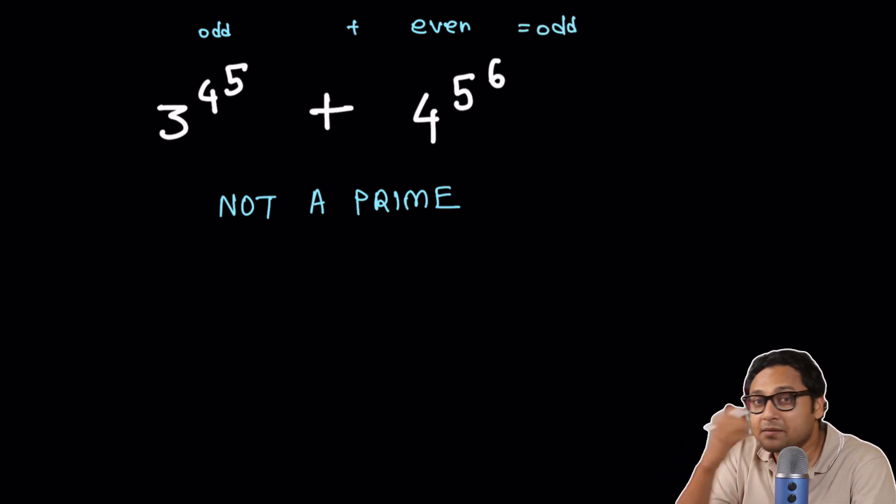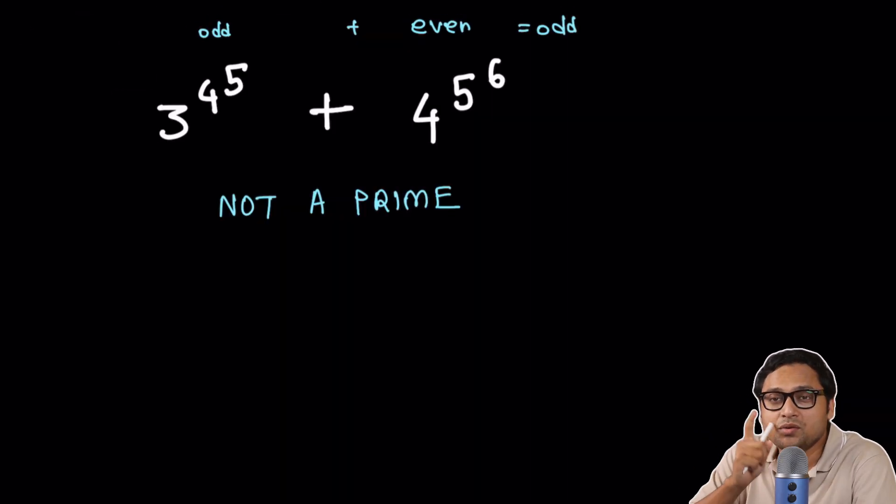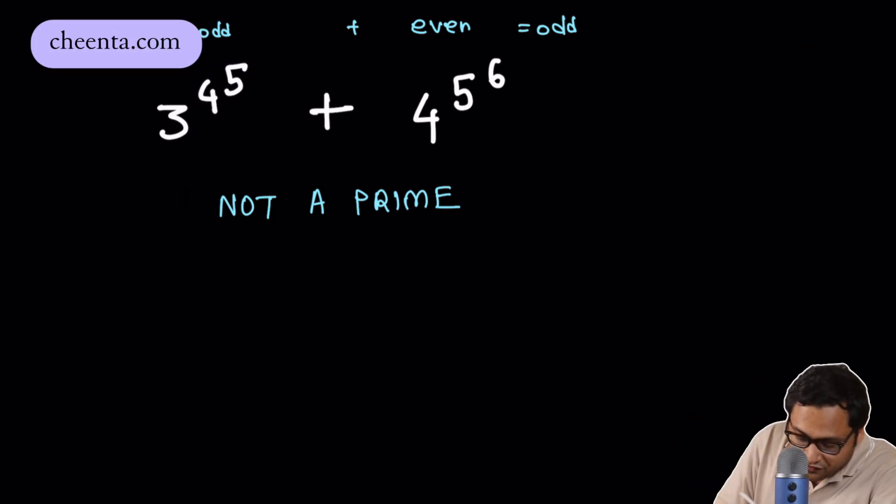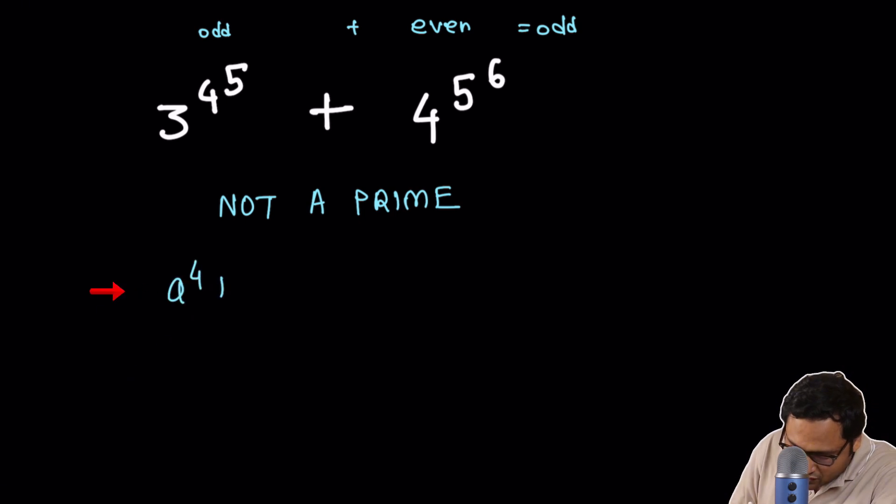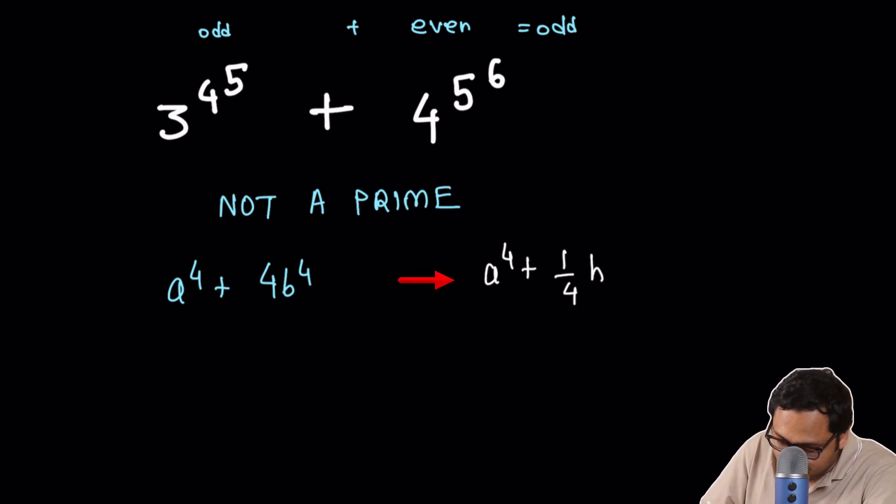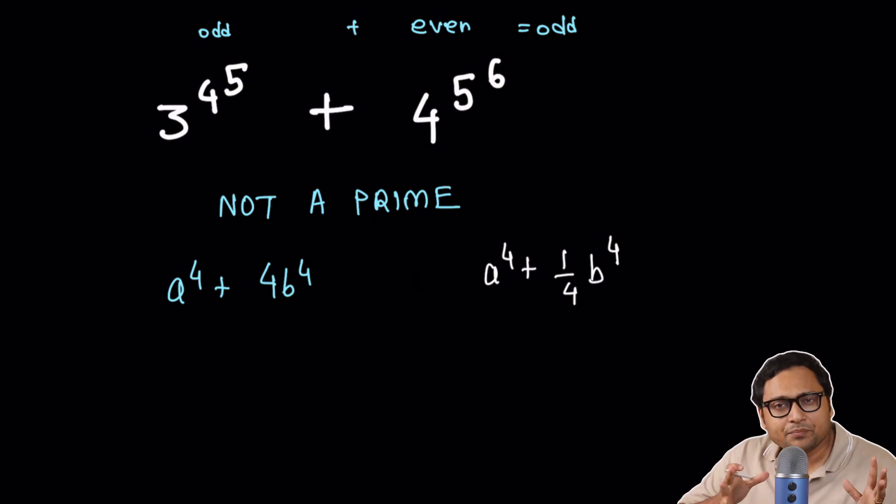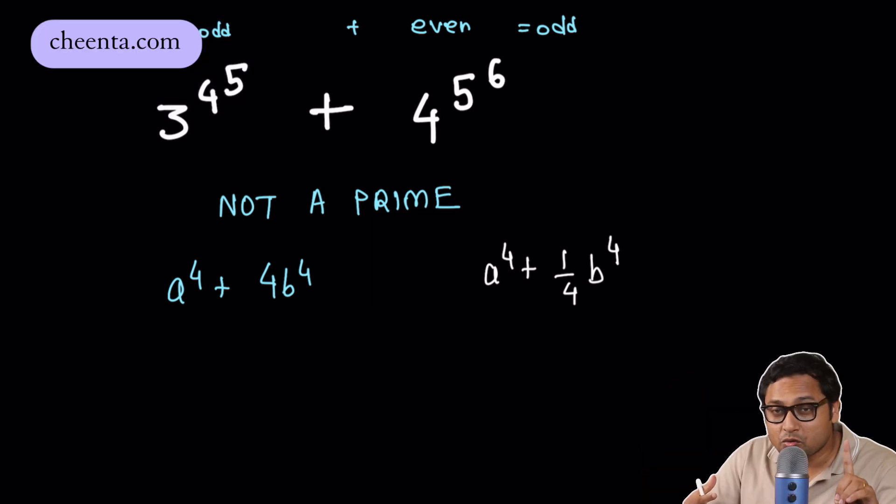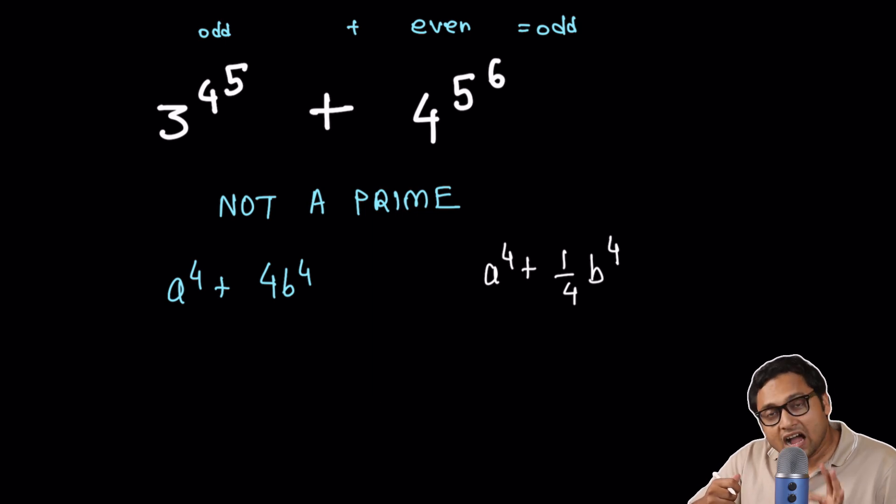Now chances are that this is a prime number. We want to show that that's not true. We want to show that it is possible to factorize a number like this. And for that purpose, I will show you two different strategies of the Sophie Germain identity. Now the first strategy is a to the power 4 plus 4b to the power 4 and the second strategy is a to the power 4 plus 1 fourth of b to the power 4. They look very similar and the good news is both of them can be factorized.